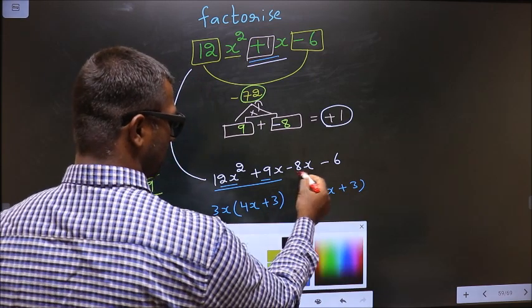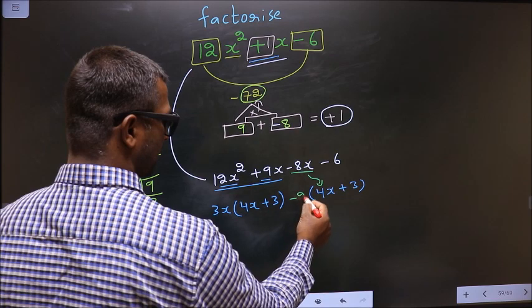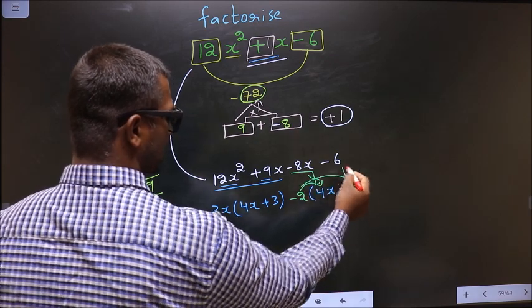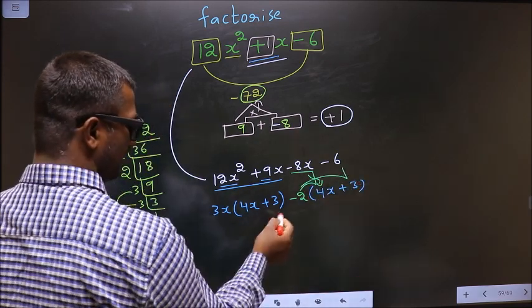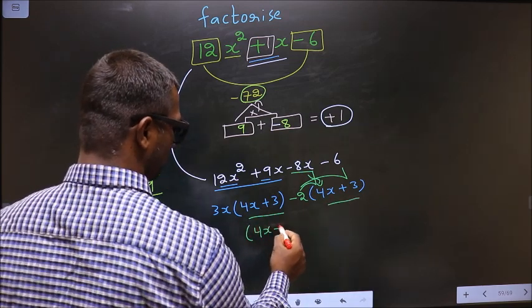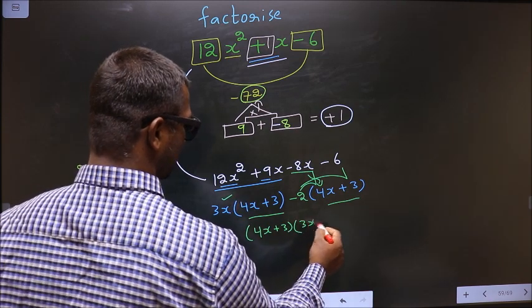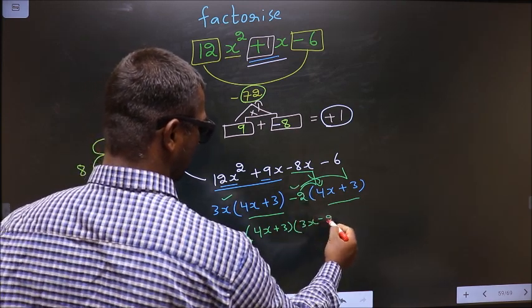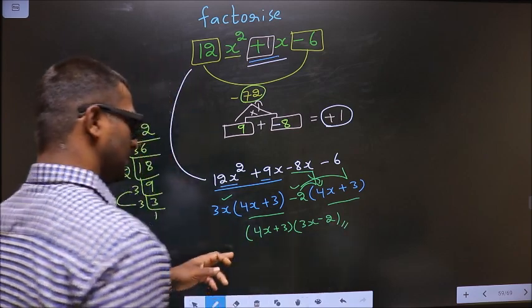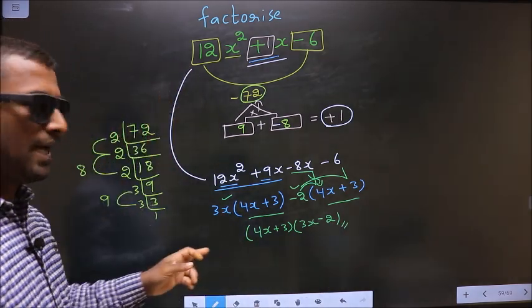Now from this, 4x has gone inside, so outside you get -2. Even if you multiply you get the same thing. Now you take out (4x + 3) common. So here you have 3x and here -2. This is our answer. Am I clear?